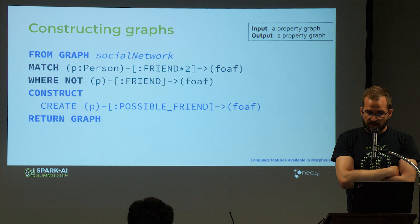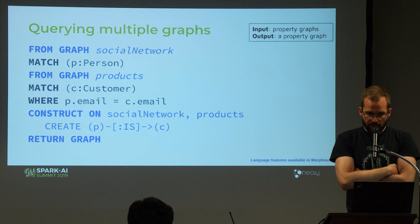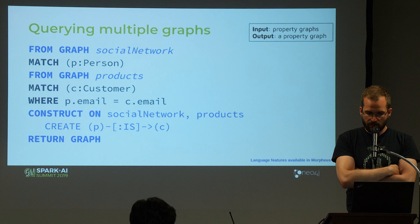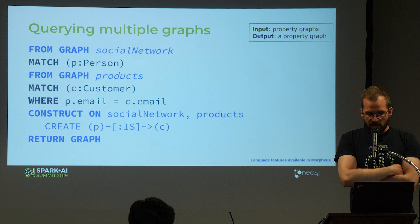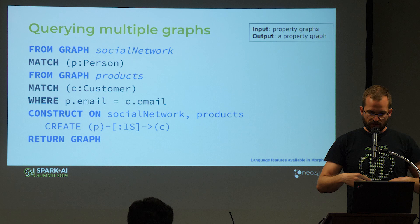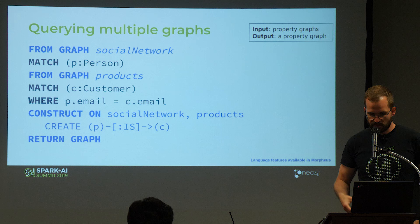The returned graph just contains the two persons and the possible friend relationship. You can also use the 'construct on' feature in the construct clause, which creates a graph union on top of those two graphs. For example, 'construct on social network and products' creates a graph union and adds the new relationship. Another query runs on two input graphs — taking persons from a social network and customers from a products graph, doing a value join on an identifying property like email address, which integrates two independent graphs into a single graph for further recommendation queries.